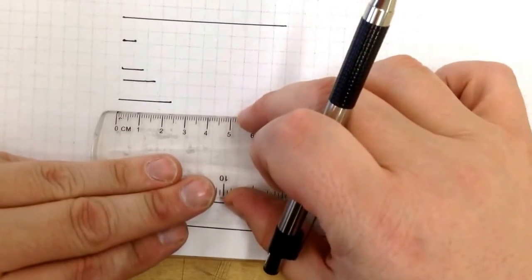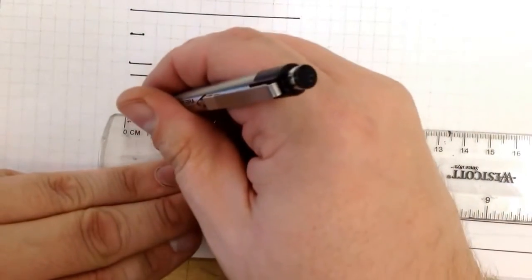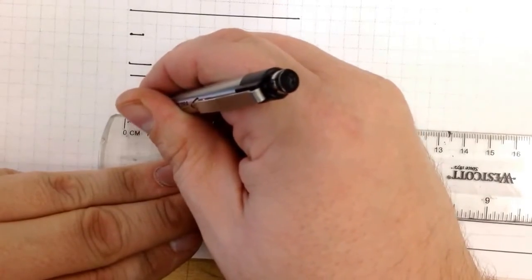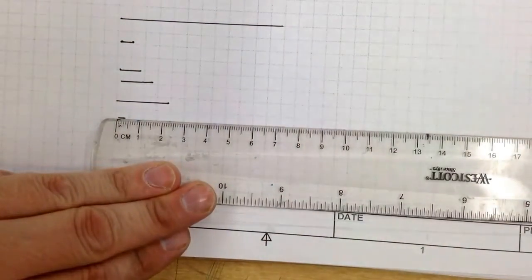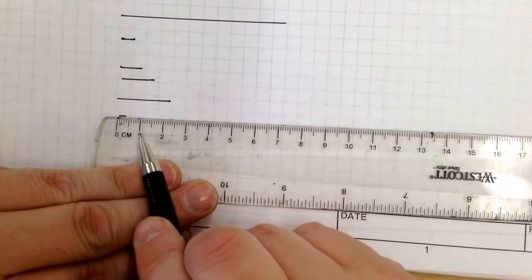If I want three millimeters, I go one, two, three. Make a line. And that is three millimeters. All you're doing here is counting to ten.